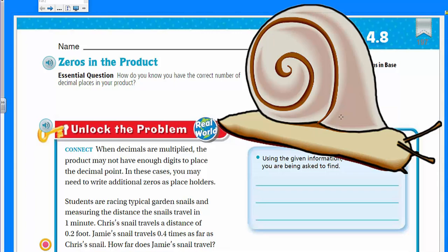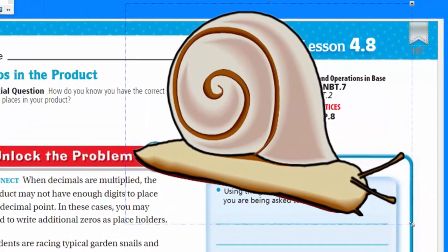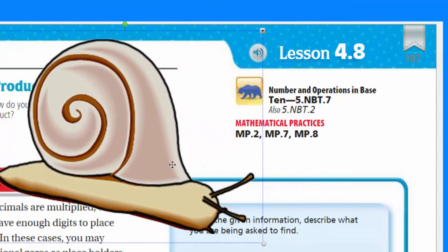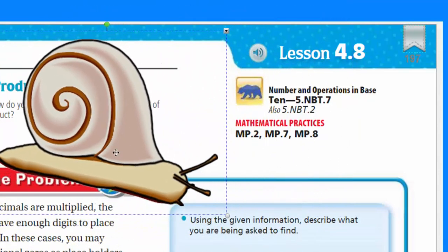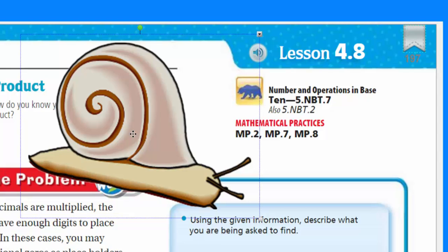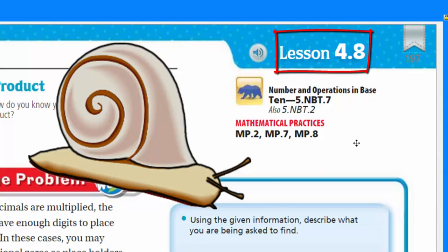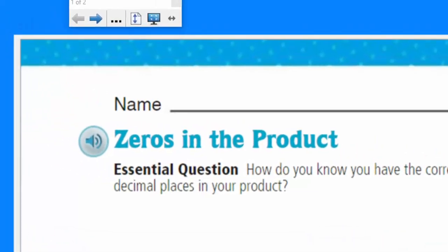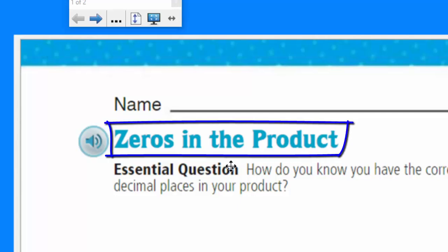Well, my friend, today is another math video and we have a lot of work to do here. We have Mr. Snail here — he's our feature animal of the day. Oh yes, it's your moment to shine, you slimy little thing. Just kidding. No offense. I have eaten you before — have you ever had escargot? Delish, my friend. We are doing lesson 4.8 of GoMath, and let's zero in on our topic here. No pun intended — it's zeros in the product. What a coincidence.